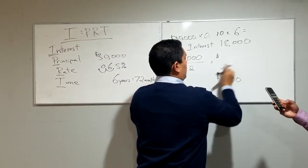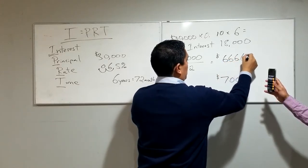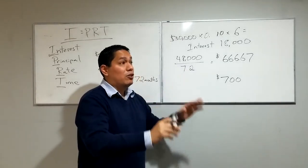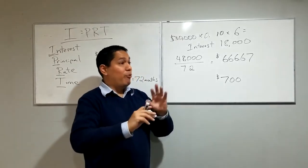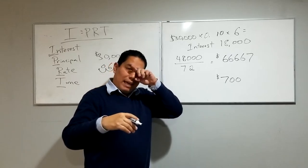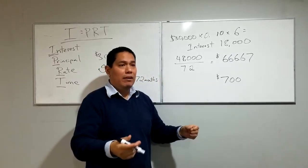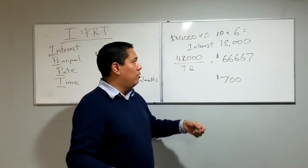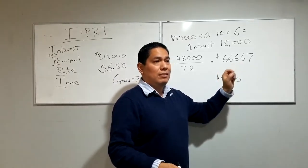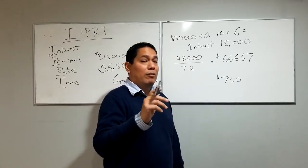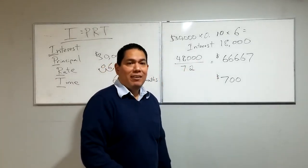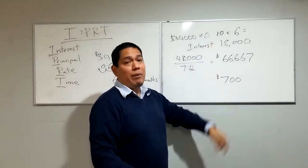Now, forty eight thousand divided by seventy two is six hundred sixty six dollars and sixty seven cents per month. So the salesperson says, 'I got you the car you want — smell that new car smell, hook, line and sinker — the minivan for your family, your kids watching videos in there, brand new and clean. And you told me you were willing to pay up to seven hundred dollars? I'm getting it to you for six hundred sixty six dollars a month.' What they're not telling you is that they gave you a ten percent interest rate when you probably qualify for five or six percent.